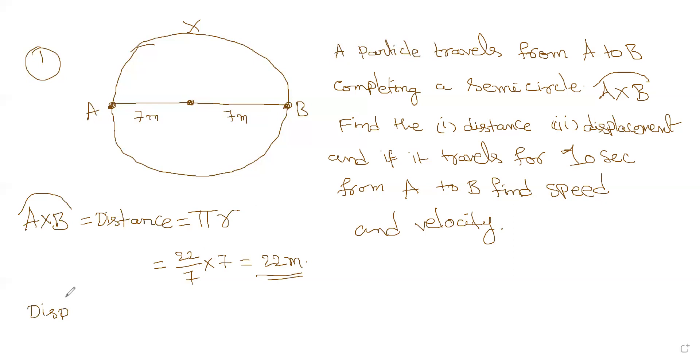Displacement. Displacement is the shortest distance between A and B, that is the straight line distance from the initial and final point. That is 7 plus 7, that is 14 meters, the shortest distance.